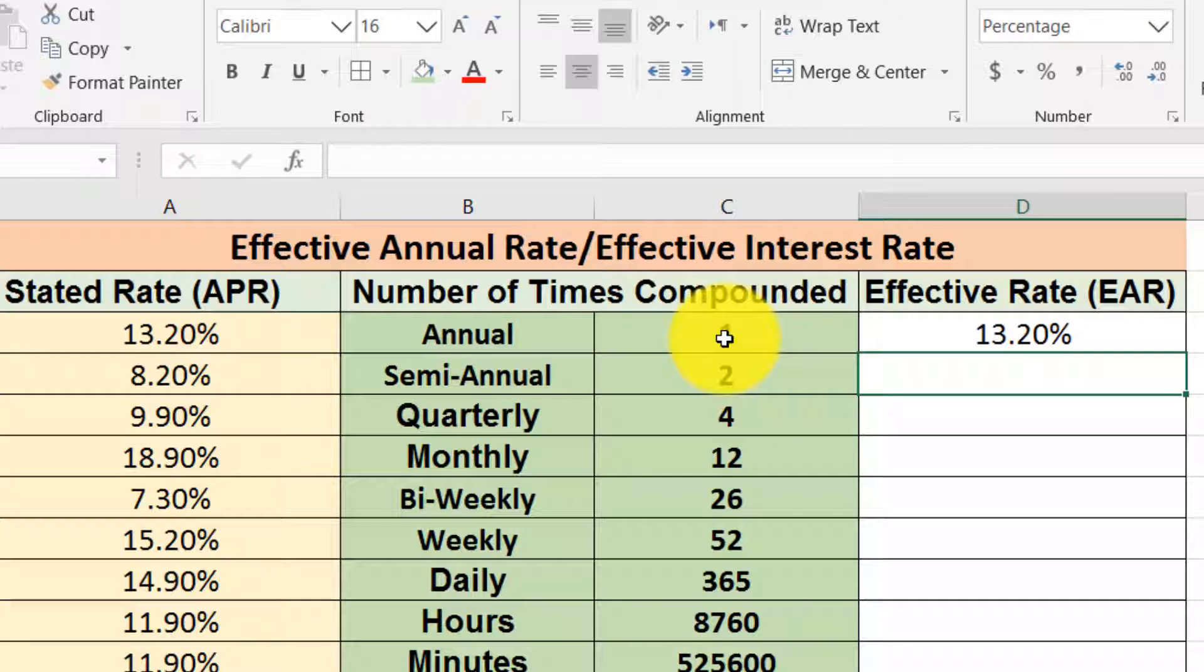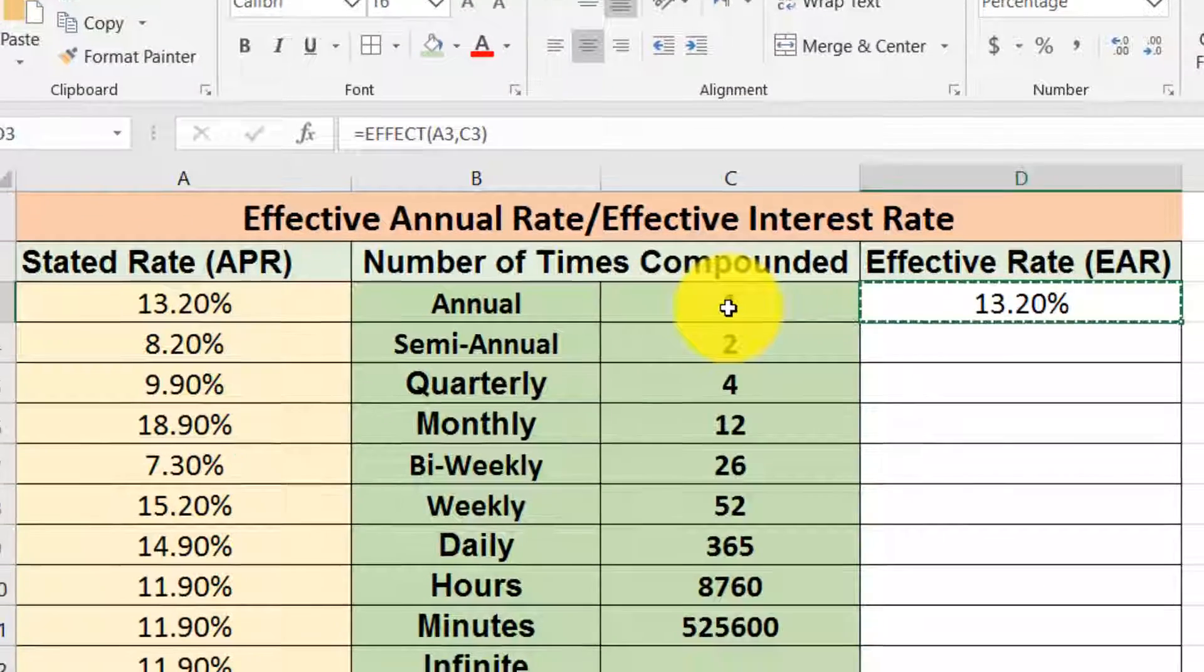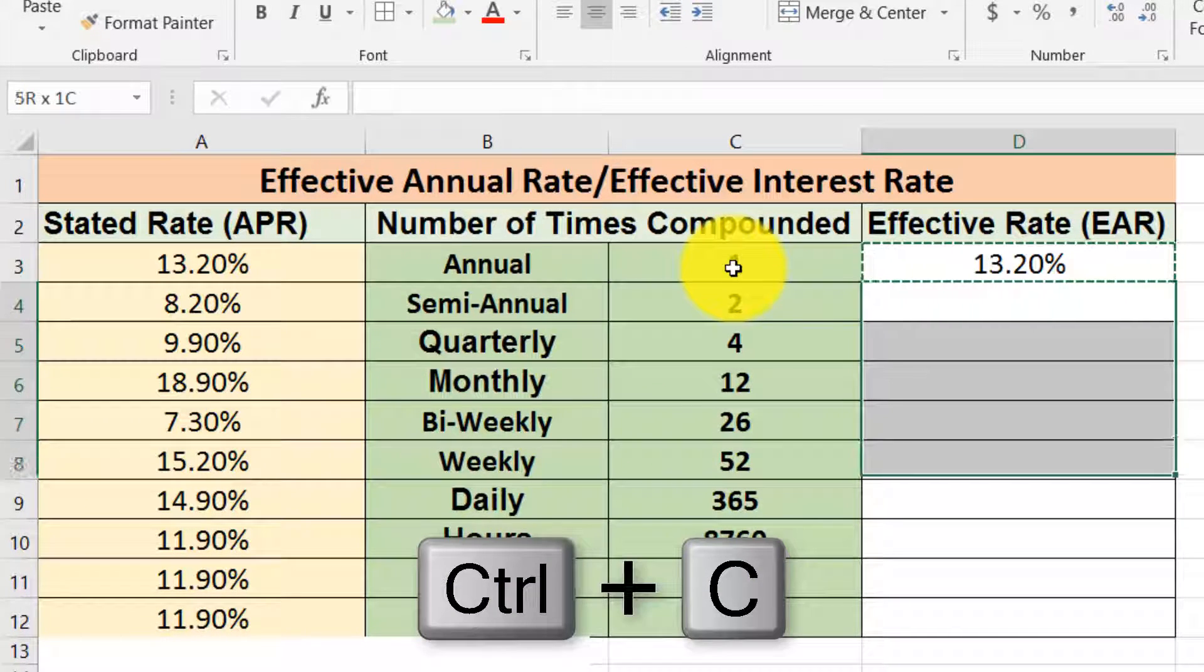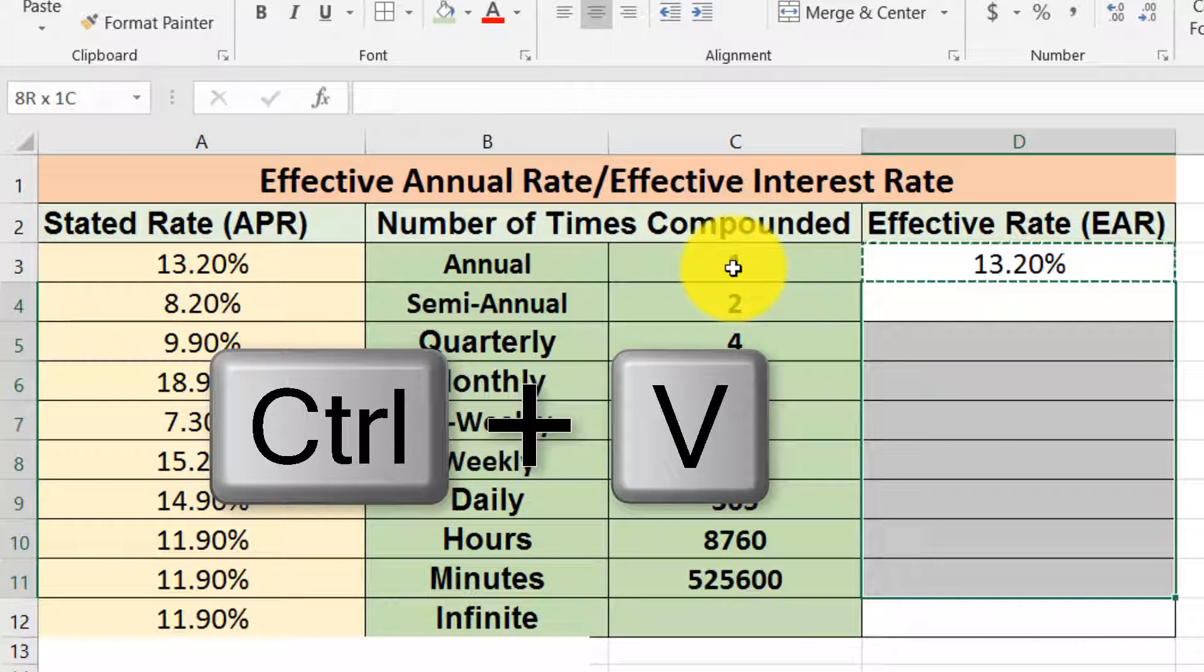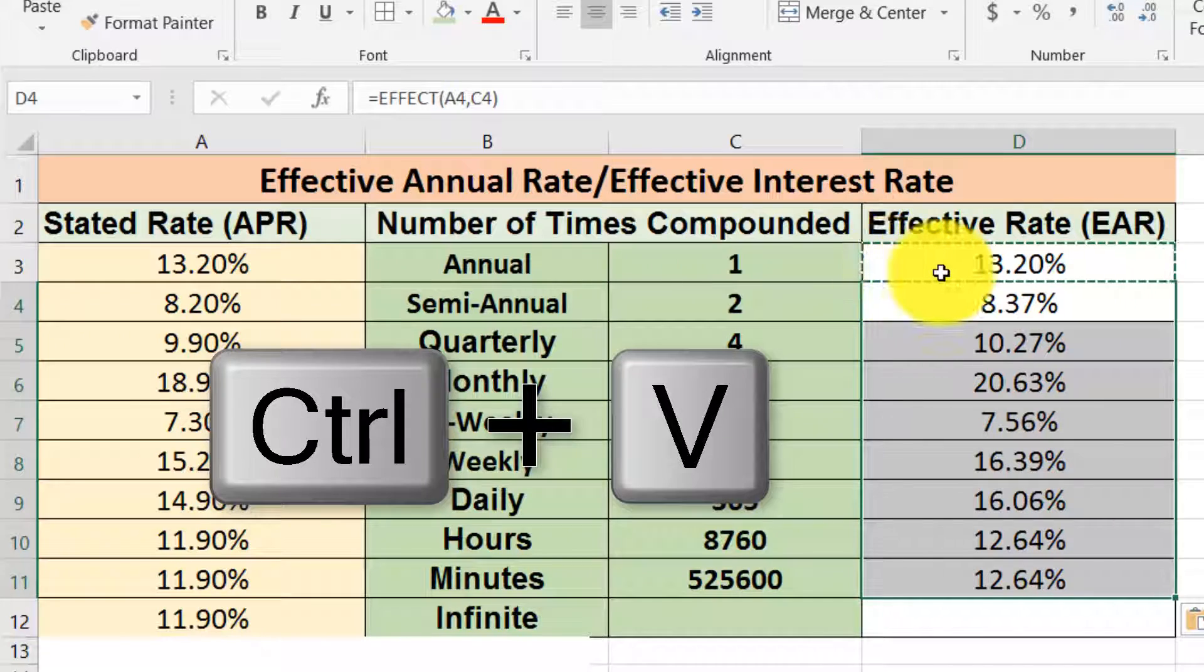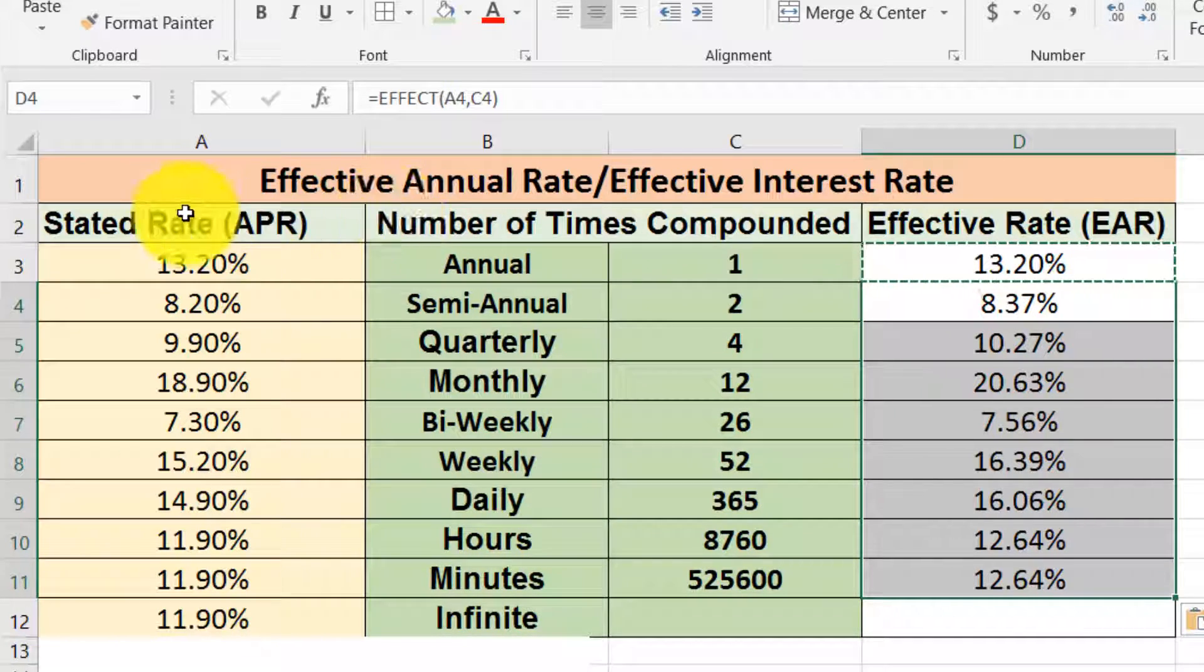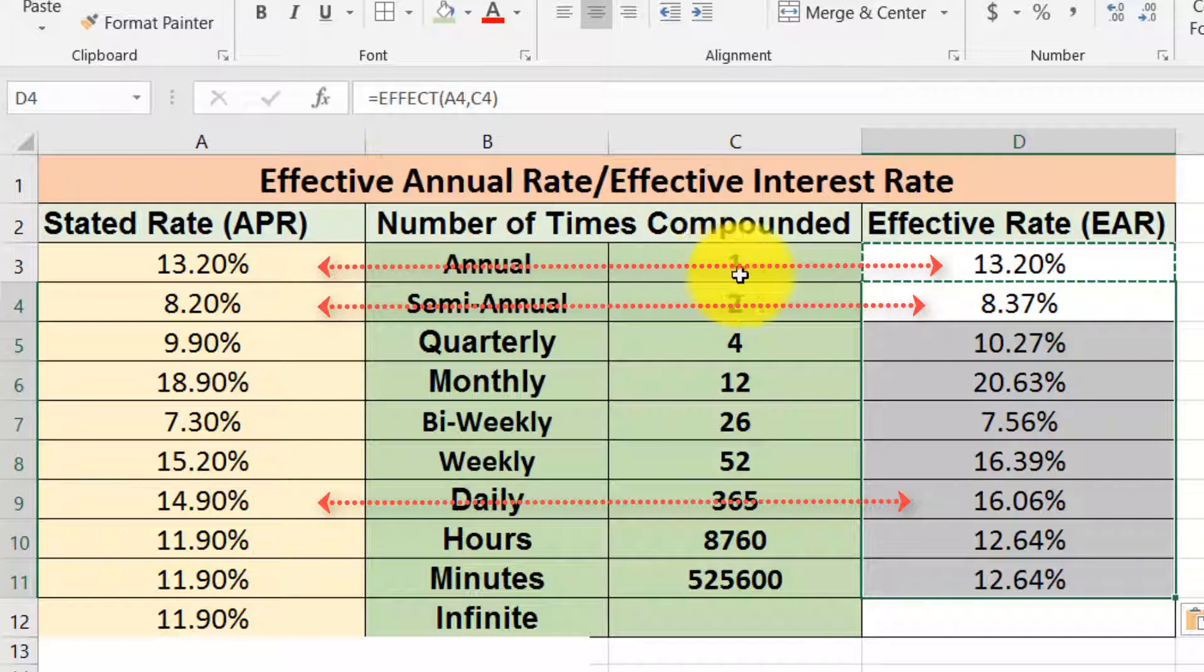Then I copy this formula and paste it to the other required cells. Here you see an interesting thing. First, the annual rate and the effective interest rate are the same in case of annual. But if you see the other cases - semi-annually, quarterly, monthly, bi-weekly, weekly, daily, hours, minutes - the effective interest rate is slightly changed from the stated rate.